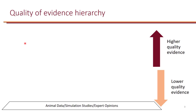Let's take a look at the quality of evidence hierarchy. At the bottom of the pyramid, you can see that we have the lowest quality of evidence. These are data from animal data, simulation study, and expert opinion. Sometimes in the absence of higher quality evidence, these studies can actually be useful.